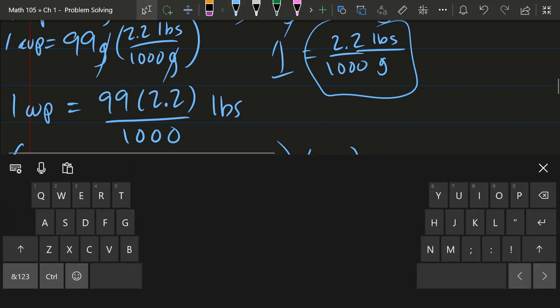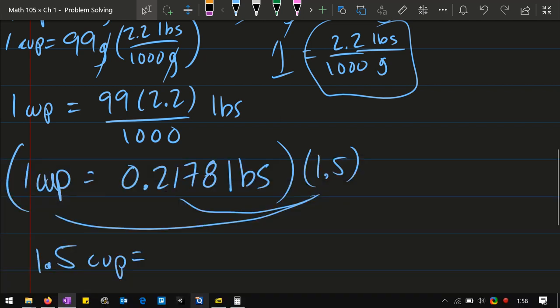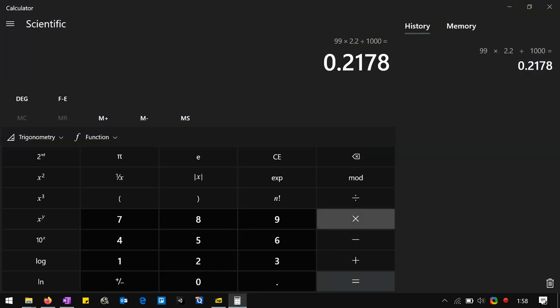I'm going to run back to my calculator. Times 1.5 equals 0.3267.